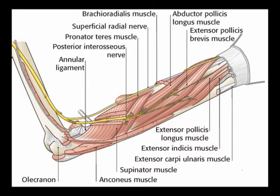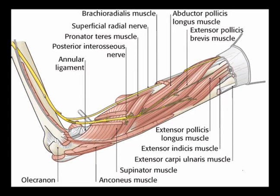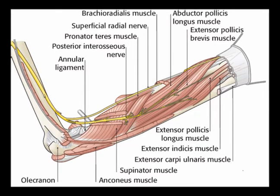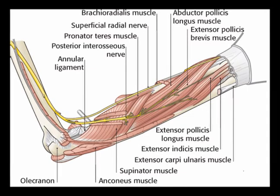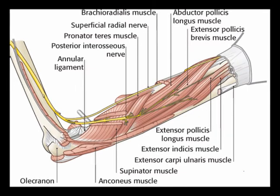The deep layer of the posterior forearm muscles consists of the abductor pollicis longus, the extensor indicis, the extensor pollicis longus, the extensor pollicis brevis, and the supinator muscle.